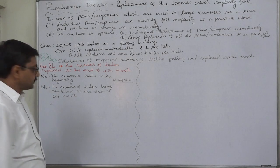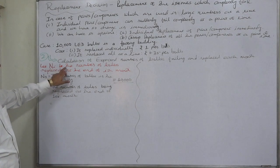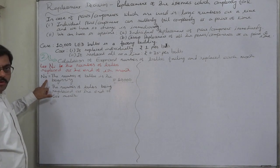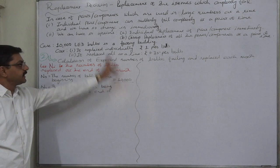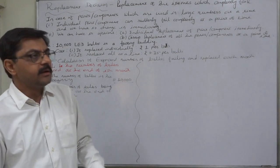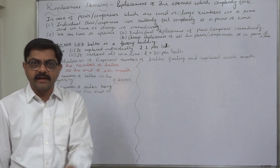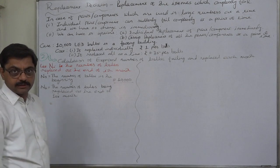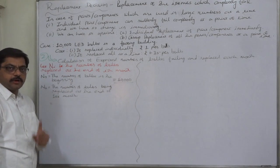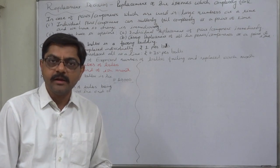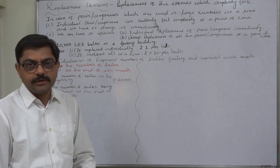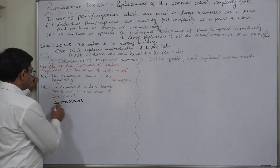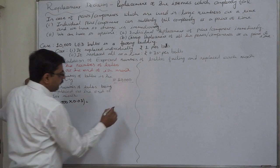Let Ni be the number of bulbs replaced at the end of the ith month, where i indicates the month number. So N0, the number of bulbs in the beginning, is 10,000. N1 is the number of bulbs being replaced at the end of the first month. We know that the probability of failure in the first month was 0.03, meaning 3 percent of bulbs are going to be replaced. So from the original 10,000, we replace 3 percent — that gives 300 in the first month.